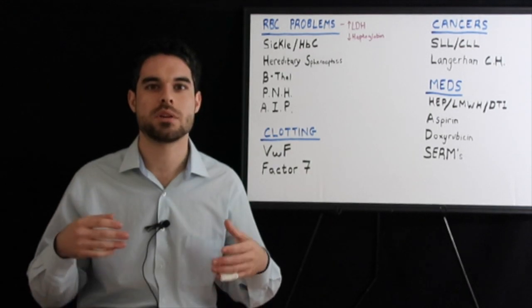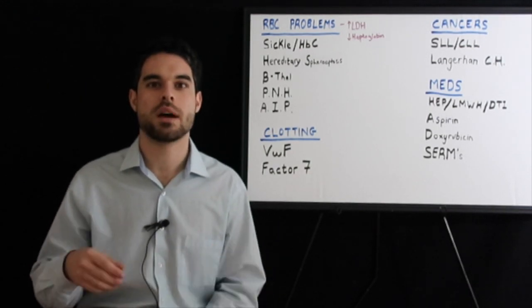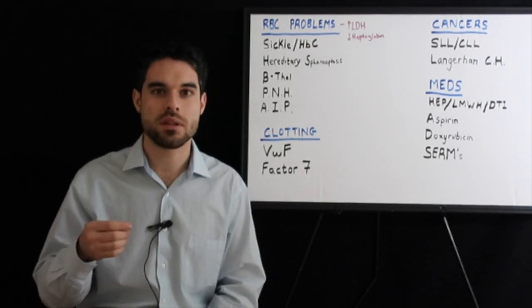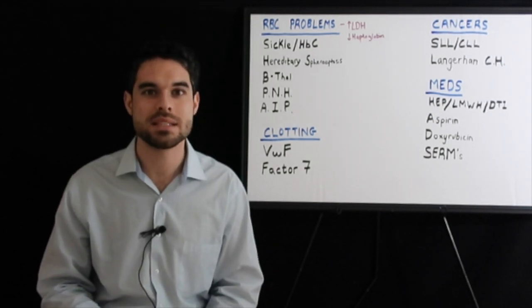S100 is a marker for mesoderms, so it's also for schwannomas, for example. But it's also CD1A positive. You see those Birbeck granules, which look like tennis rackets. And very importantly, they activate the T cells.